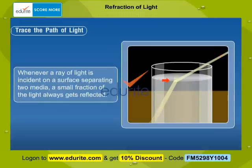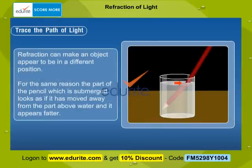Note that whenever a ray of light is incident on a surface separating two media, a small fraction of the light always gets reflected. Refraction can make an object appear to be in a different position. For the same reason, the part of the pencil which is submerged looks as if it has moved away from the part above water, and it appears fatter.